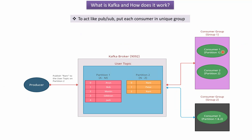Here you can see consumer group 1, which has two consumers: consumer 1 and consumer 2. Consumer group 2 has only one consumer, consumer 3. Consumer 1 is responsible for consuming messages from partition 1, consumer 2 from partition 2, and consumer 3 — being alone in group 2 — is responsible for consuming messages from both partitions. The username Arun is published by the producer only once, but it will be consumed by consumer 1 as well as consumer 3. So the same username is published once but consumed many times — this is an example of PubSub. To act like PubSub, we have to put each consumer in a unique group.